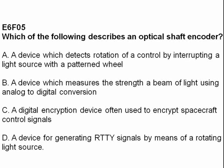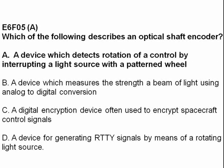Which of the following describes an optical shaft encoder? The answer is A, a device which detects rotation of a control by interrupting the light source with a patterned wheel.